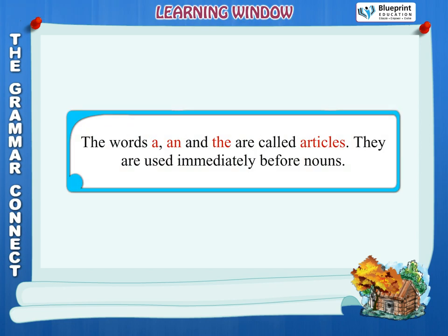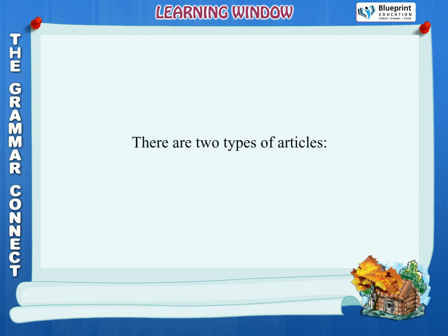The words a, an, and the are called articles. They are used immediately before nouns. There are two types of articles: indefinite articles and definite articles.